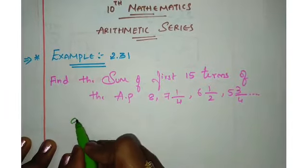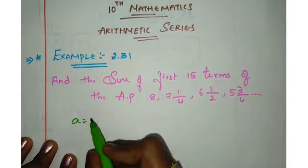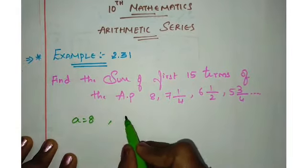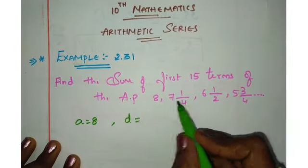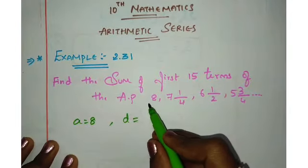Now, A is the first term. First term is 8. D is t2 minus t1, second term minus first term.